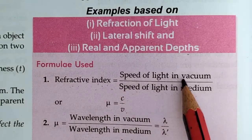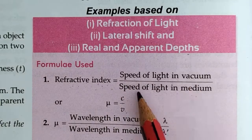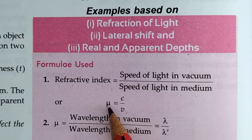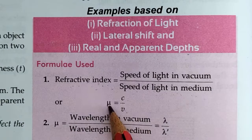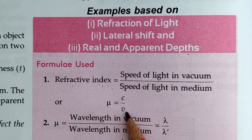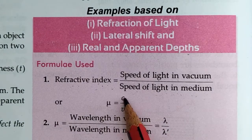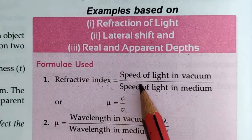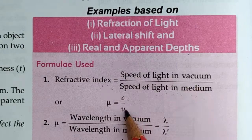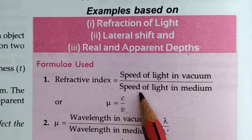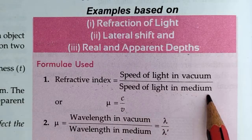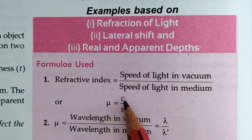The first formula: refractive index mu equals speed of light in vacuum divided by speed of light in medium. That means mu equals c divided by v, where c is the speed of light in vacuum and v is the speed of light in the medium.